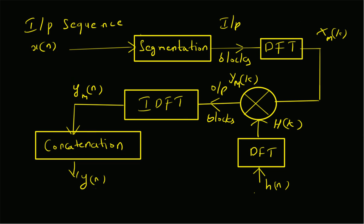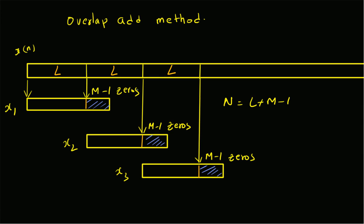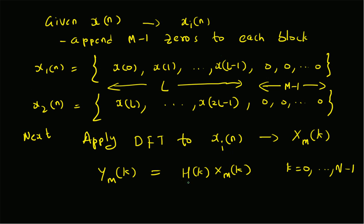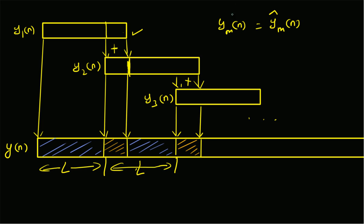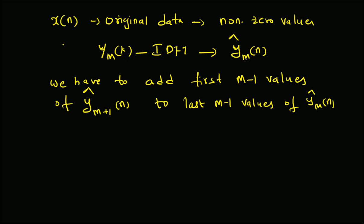To summarize, we have looked at linear filtering of long data sequences specifically using the overlap-add method. The main idea is: segmentation of the input sequence, taking L values and placing them in separate blocks, then appending M minus one zeros to each block so the length of each block is N. The next step is applying DFT to each block to get Xm(k), then multiplying Xm(k) with H(k) — the DFT of the impulse response of the filter — to get the output blocks in frequency domain Ym(k). We then apply IDFT on Ym(k) to get ŷm(n). For the overlap-add method, ŷm(n) and ym(n) are actually the same.